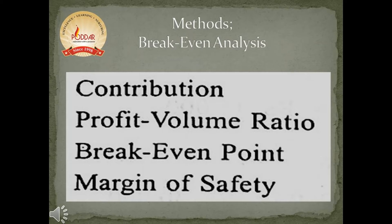Let us now talk about the methods of break-even analysis. The first method is contribution. The second method is profit volume ratio, or PV ratio. The third method is break-even point, also called BEP. And the fourth method is margin of safety.